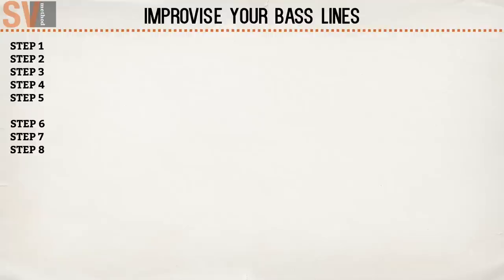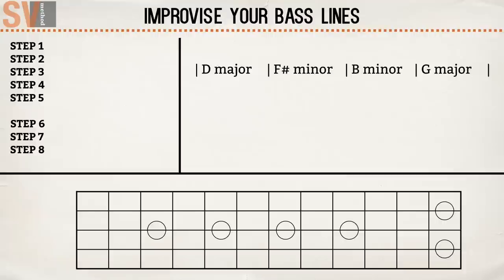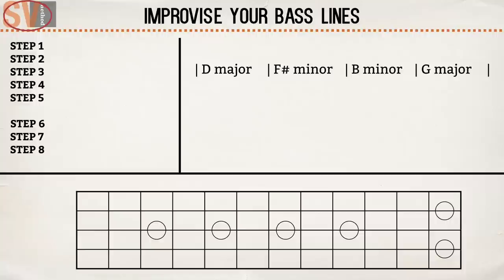First of all we need a chord progression for improvisation. We'll use this: one bar D major, one bar F sharp minor, one bar B minor, and one bar G major. If you have trouble finding the root notes, check out the video I made about finding all the notes on the bass guitar in five minutes.